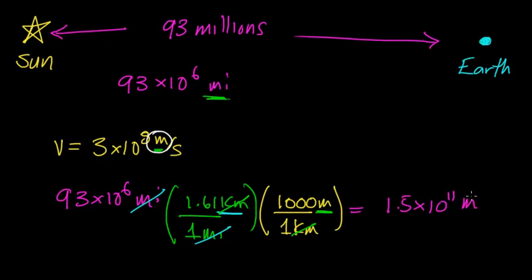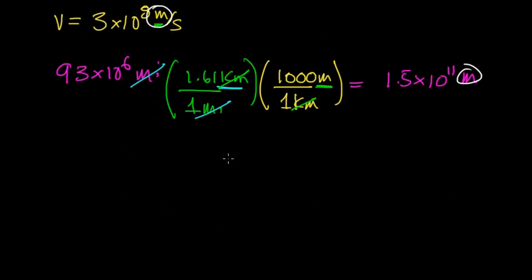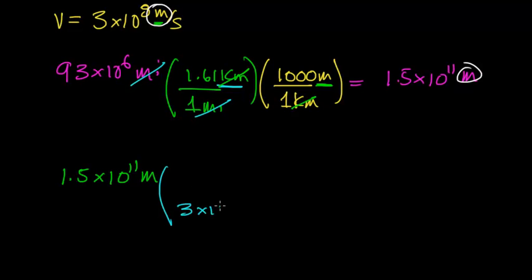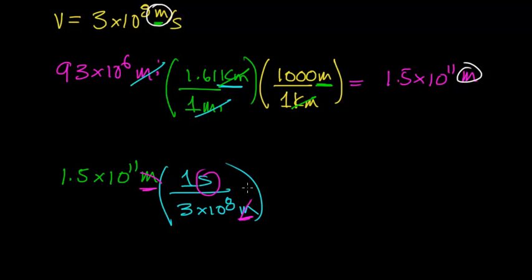Now our units of length are consistent. To calculate the time required, I'm not going to apply a formula directly. I'm going to say that the distance I need to travel is 1.5 times 10 to the 11th meters, and I know that light travels 3 times 10 to the 8th meters every single second. The unit of meters cancels out with the unit of meters, leaving me with units of seconds.